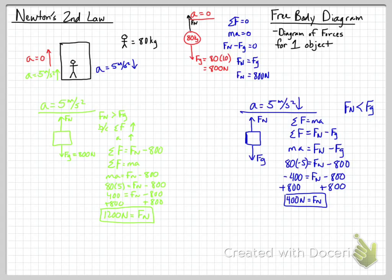Those were three examples: at rest or constant velocity with acceleration zero; accelerating up; and accelerating down. You should check by inspection: if accelerating up, Fn should be greater than Fg; if accelerating down, Fn should be less than Fg. Keeping up as positive and down as negative, the net force will be positive when accelerating up and negative when accelerating down — which is what we got in both equations.